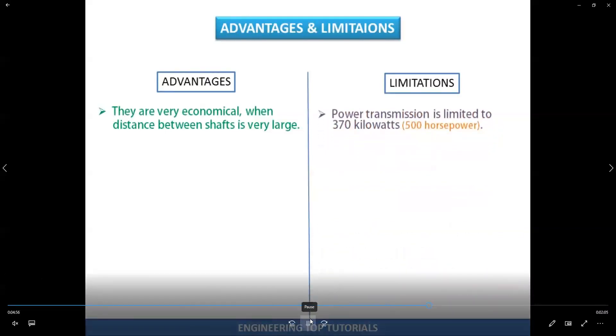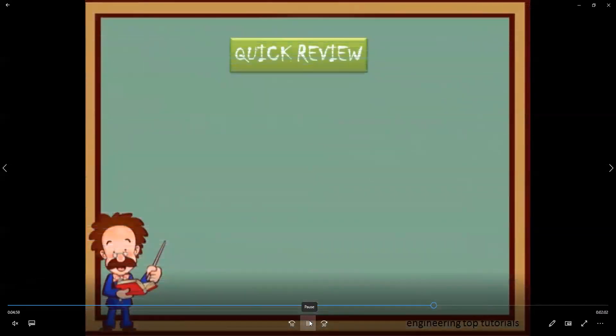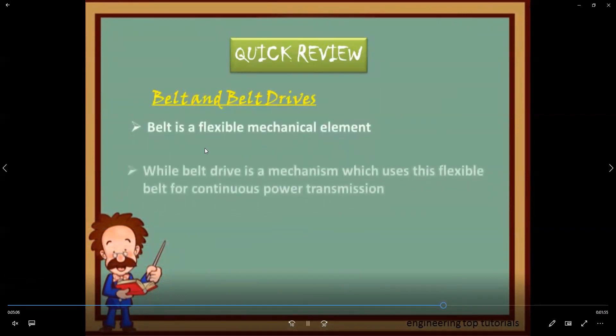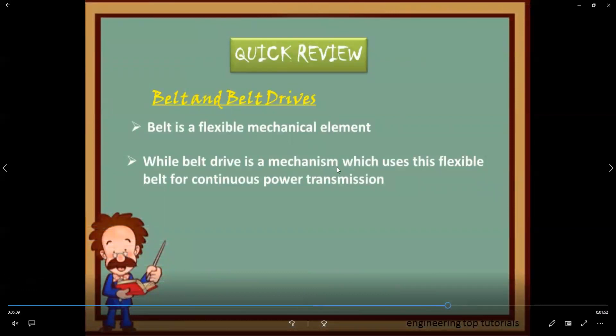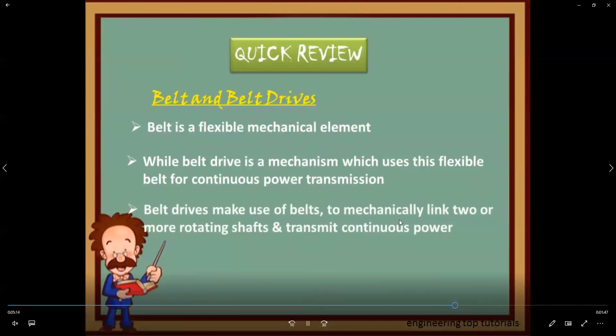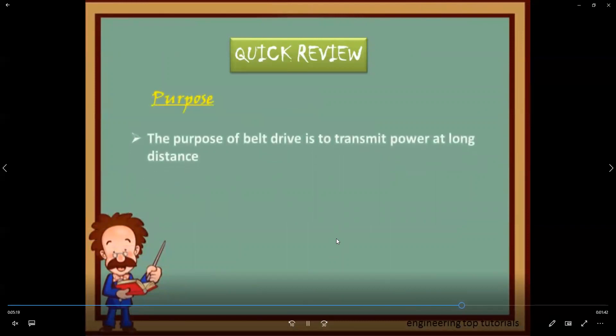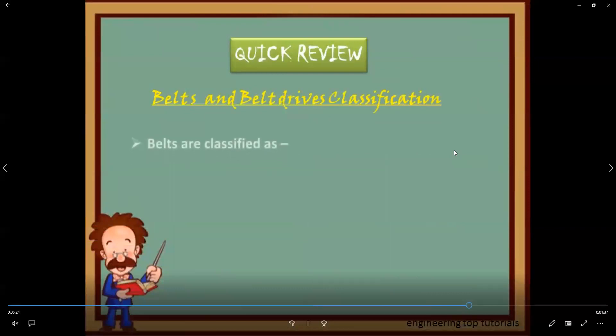We go through the quick review. What is a belt? It's a flexible mechanical element. Flexible belt for continuous power transmission. Use of belt is a mechanical link of two or more shafts to transmit continuous power. Transmission of power is the purpose at long distance. This is the types of belt. Normally we use V-belt only.